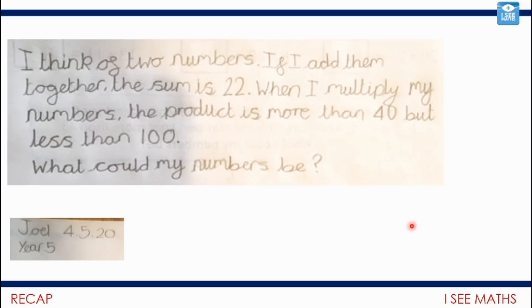A fantastic question coming through from Joel here. Really like this one. Slightly different in its design. I think of two numbers. If I add them together, the sum is 22. When I multiply my numbers, the product is more than 40 but less than 100. So now there's like a limit on either end. What could my numbers be? Pause the video and see if you can find different answers. Or do you know how many possible answers there are to Joel's question?